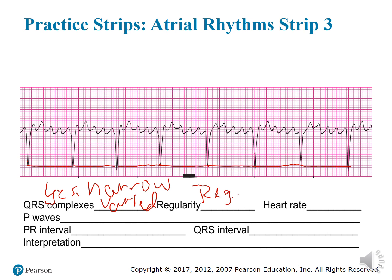Let's figure out heart rate. Counting across gives us 18 small boxes. So 1500 divided by 18 equals 83 beats per minute.